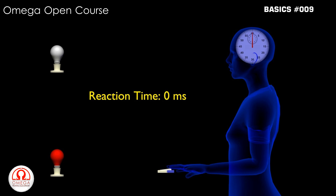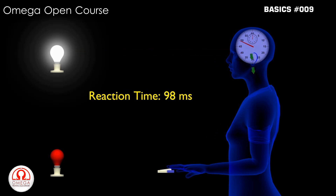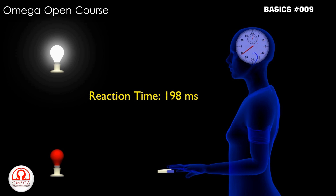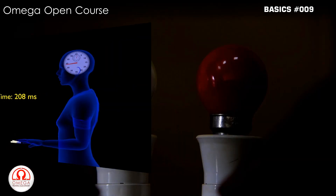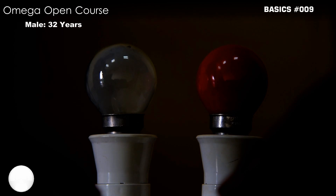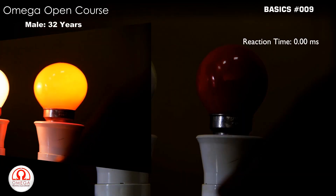The time from when a stimulus or a signal is received by a person to the time he or she reacts is called the reaction time of that person. As you can see in these videos, the reaction time varies from person to person.